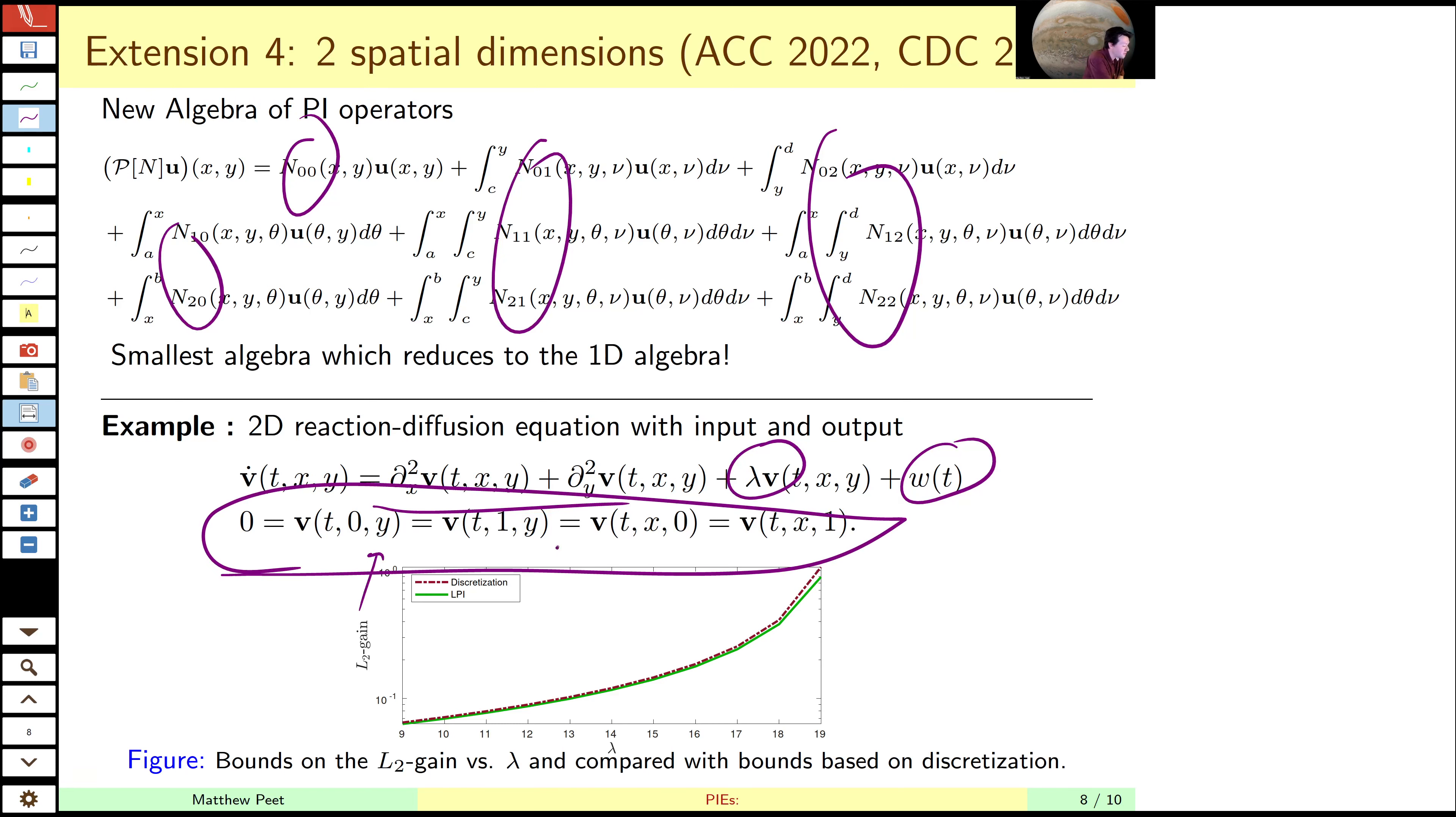Here we've plotted the L2 gain of the system as a function of the reaction term. As the reaction term increases, the L2 gain increases and compared it to a discretization based result. So we can see it tracks very nicely with that. However, by increasing the complexity of the algebra, we've increased the complexity of the computational problem.